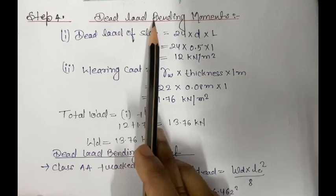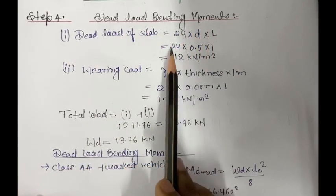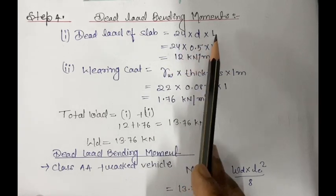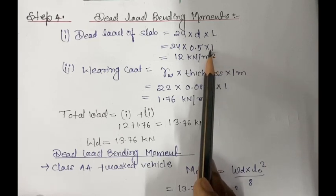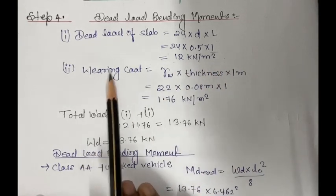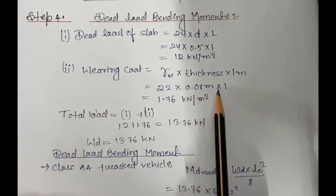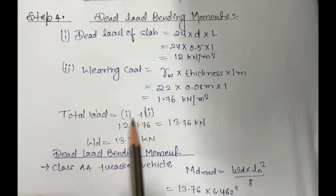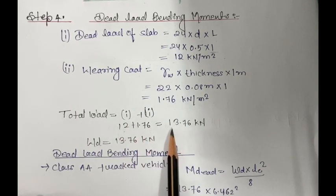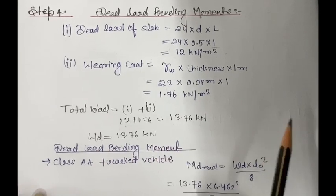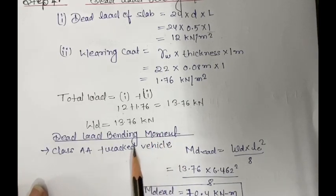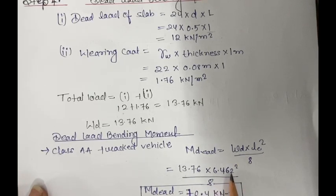In step 4, we find the dead load bending moments. Dead load of slab equals 24 into 0.5 into 1 meter, giving 12 kN/m². Wearing coat load equals gamma_w 22 into 0.08 into 1 equals 1.76 kN/m². Total dead load W_d equals 12 plus 1.76 equals 13.76 kN/m. Dead load bending moment equals W_d into L_eff squared divided by 8, giving 13.76 into 6.462 squared divided by 8, equal to 70.4 kN·m per meter.